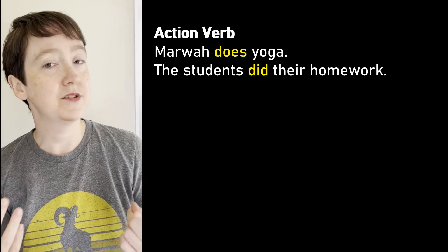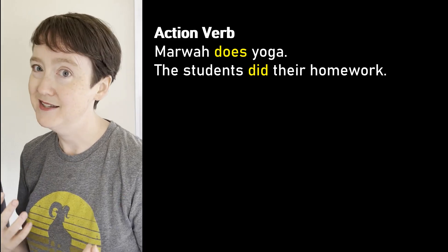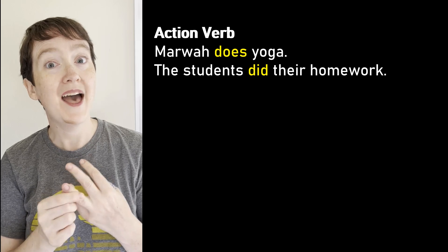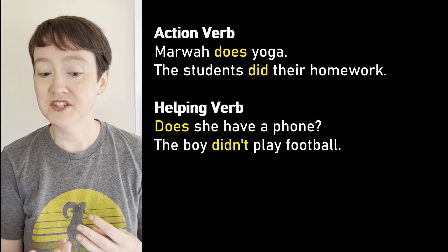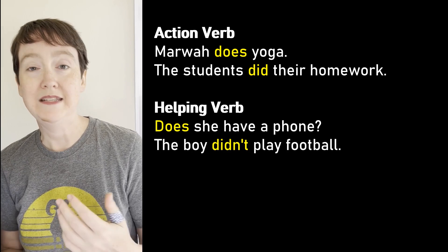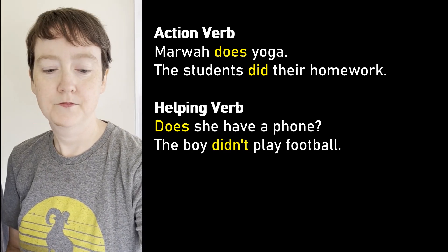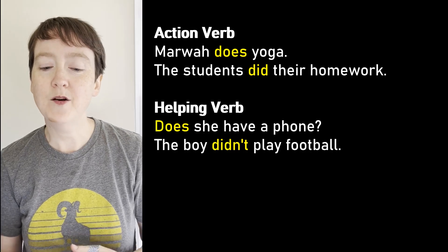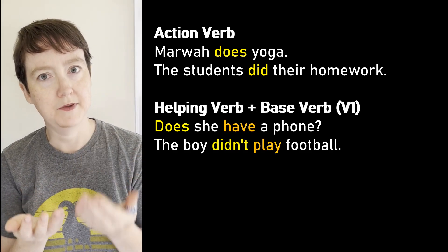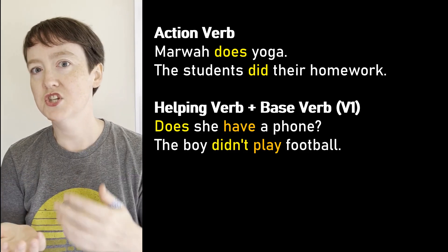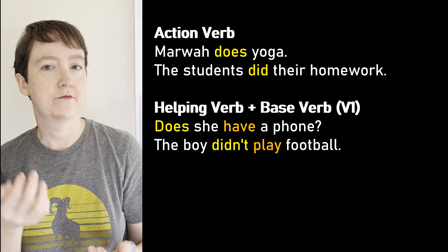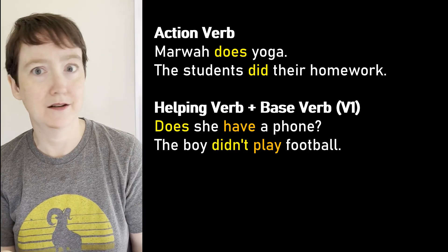But a few verbs can do more than one job. The first example is do. Do can be an action verb: 'Marwa does yoga,' 'The students did their homework.' Or do can be a helping verb: 'Does she have a phone?' 'The boy didn't play football.' When do is a helping verb, we put it with a main verb in base form — 'Does she have,' not 'has'; or 'the boy didn't play,' not 'played.'